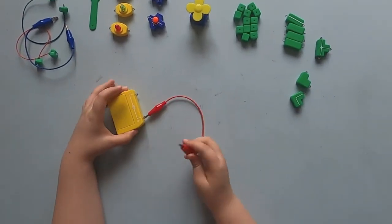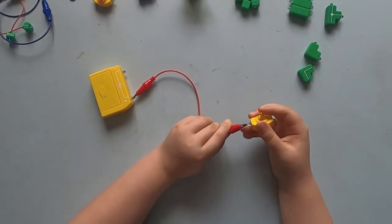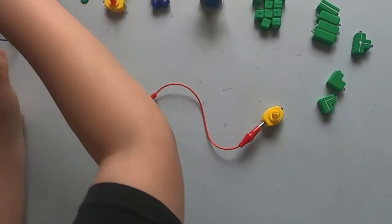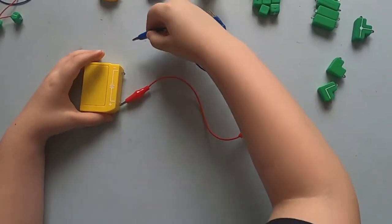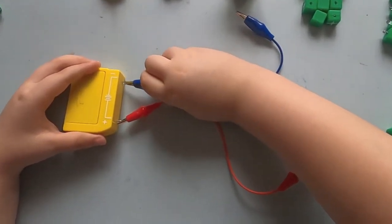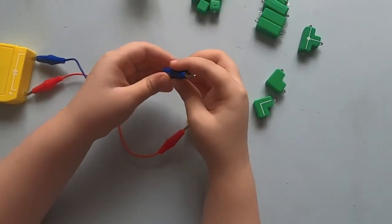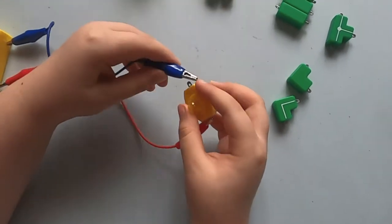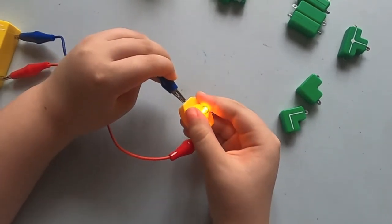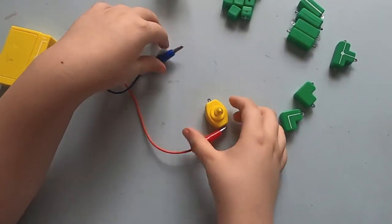I begin by connecting the red alligator clip to the positive side of the battery box and then attach the light to the other end of the wire. I then connect the blue alligator clip to the negative side of the battery box and to the other end of the light. As you can see, the light turns on and when I take off the clip, the light turns off.